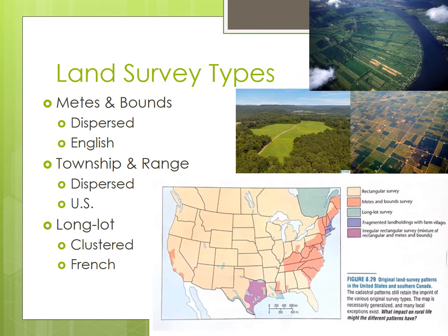Land survey patterns, or land division patterns, can impact the types of settlements we see in different areas. Survey patterns occur as land surveyors lay out property lines, which can be done before, during, or after an area is settled, and requires geometry as well as specialized tools. There are three major types of land survey systems that are especially impactful for rural areas throughout the United States, and we also see similar patterns in other places around the world.